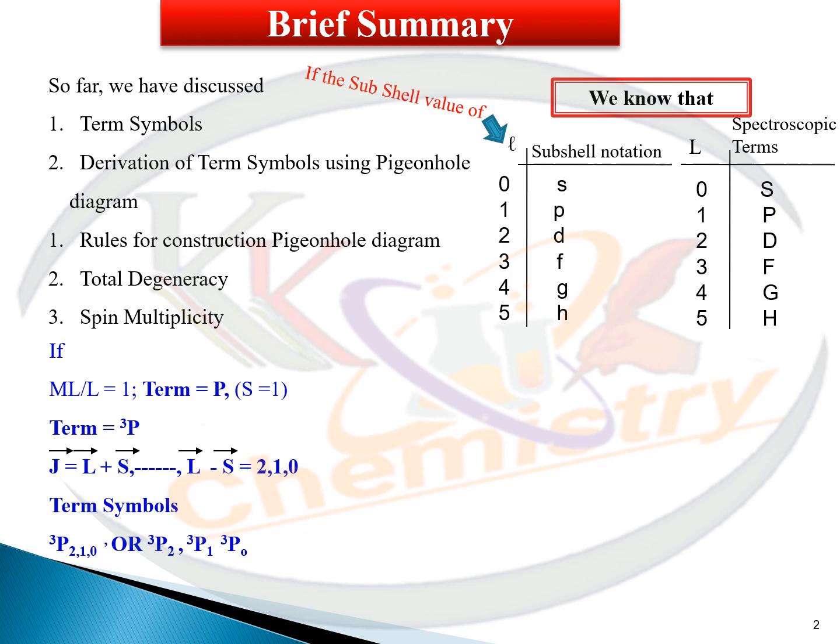As we discussed earlier, if L is 1 and S is 1, the values of J are 2, 1, 0. The spectroscopic term symbol will be triplet P — written as 3P2, 3P1, 3P0. You can also separate these individually.